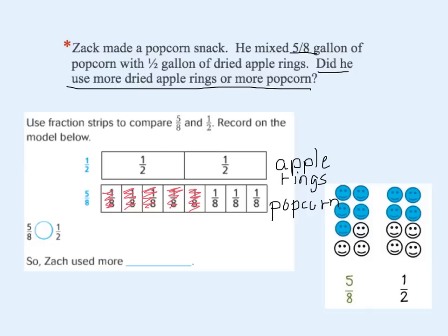I know he had one-half gallon of the dried apple rings. You can see quite clearly by using these fraction bars that he has more popcorn than apple rings. So we can see that five-eighths is greater than one-half, and Zach used more popcorn.